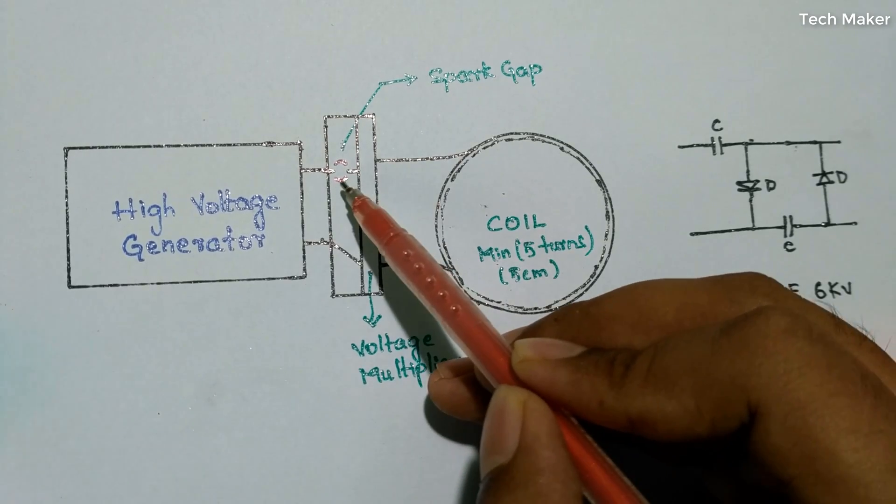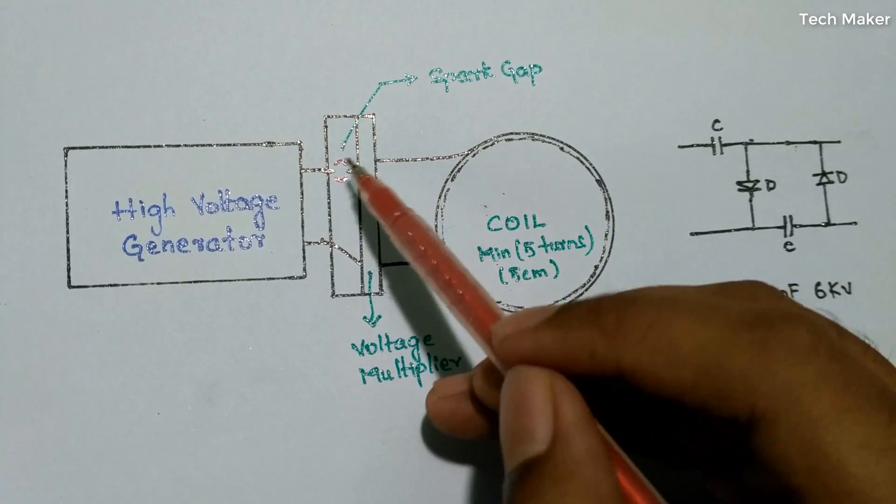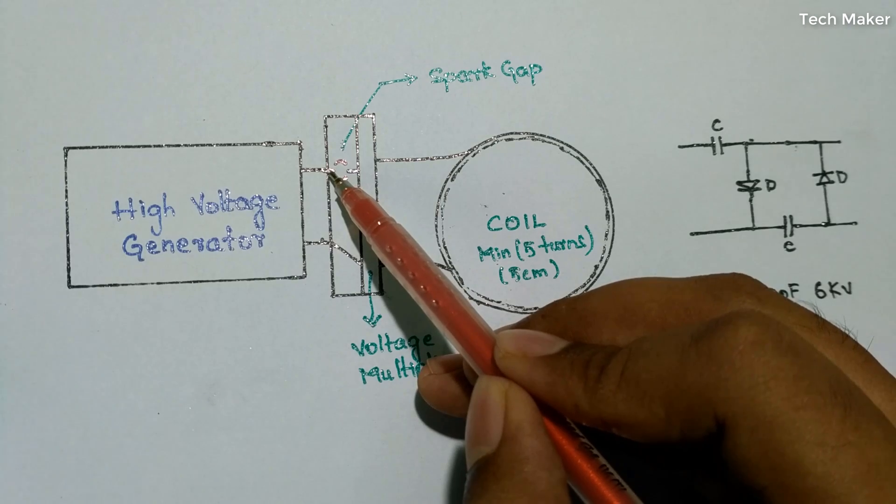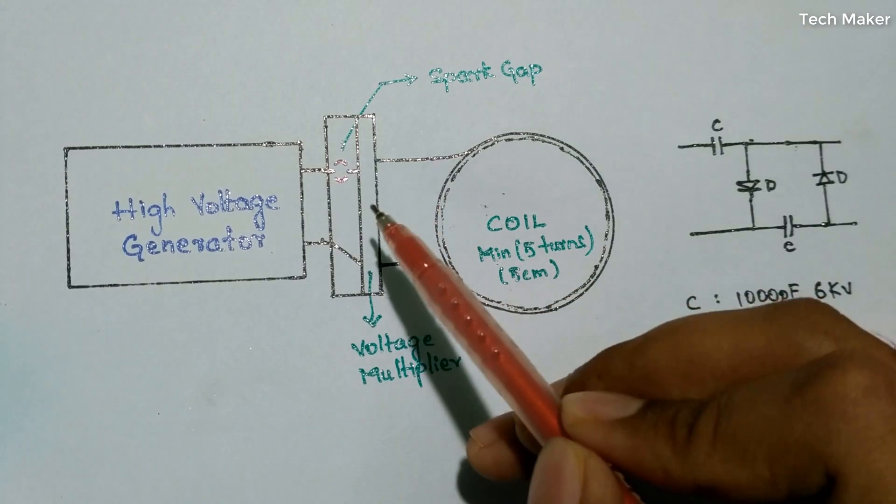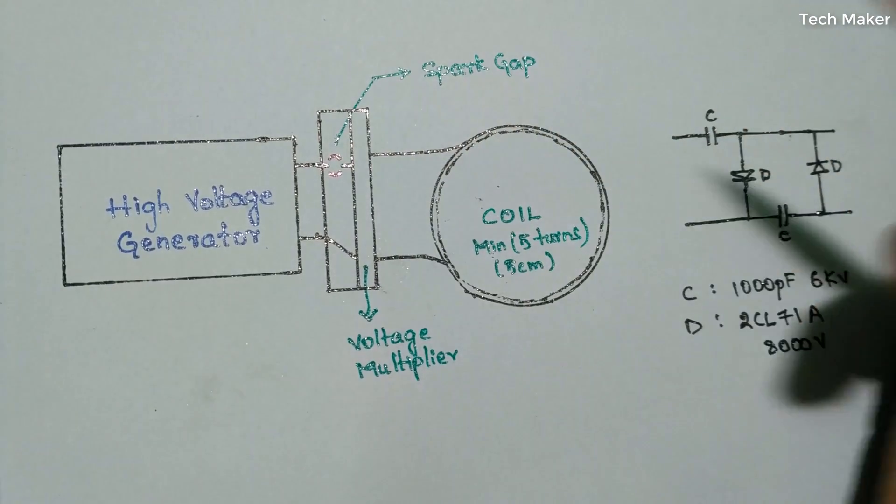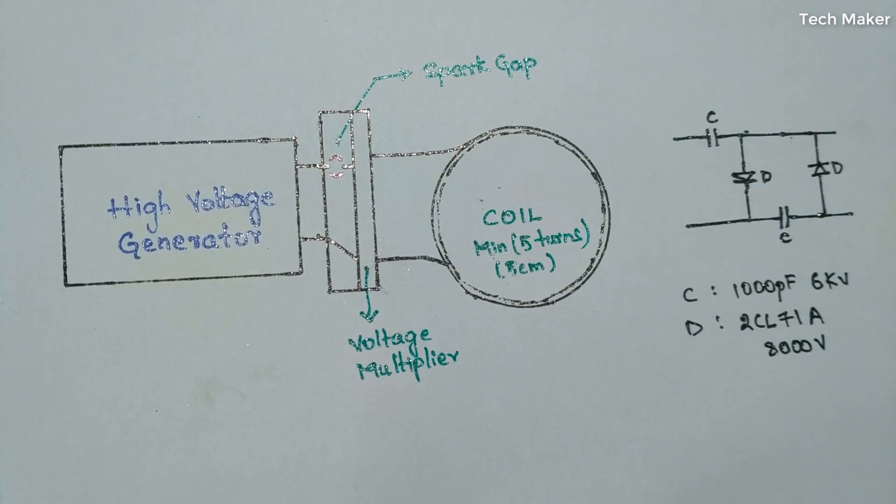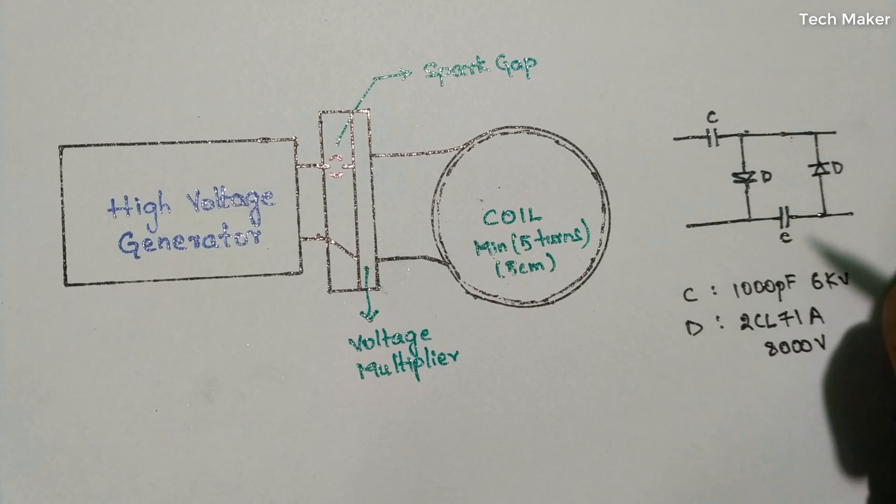Spark gap means we have to leave some distance - it is an open circuit. You have to leave some distance such that the spark from the high voltage generator will jump to the coil. Then you will see the spark here.